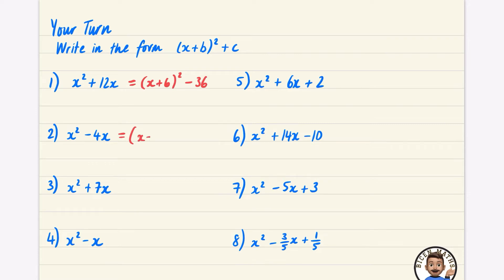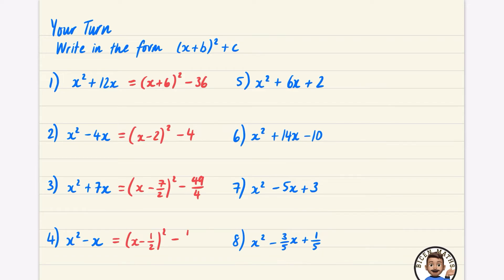For this one, we half the minus 4 to get minus 2, and subtract 2 squared which is 4. Next, I half the 7 to get minus 7 over 2, and subtract that squared — 7 squared is 49 and 2 squared is 4, giving 49 over 4. For the next one, the x coefficient is 1, so I subtract 1 divided by 2, which is a half, and then subtract a half squared, which is a quarter (1 over 4).